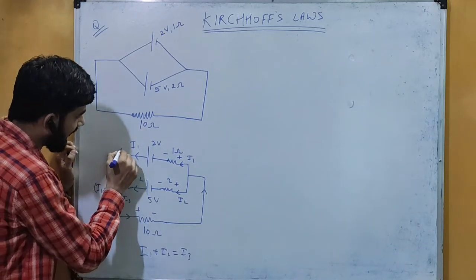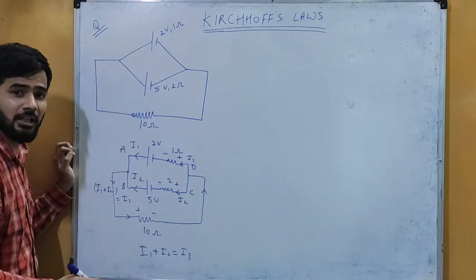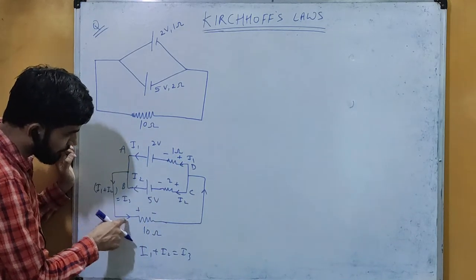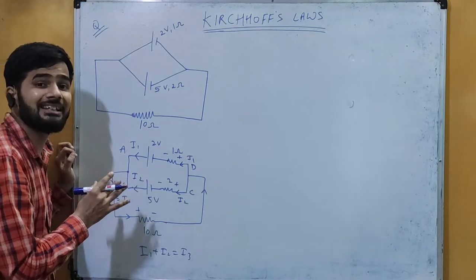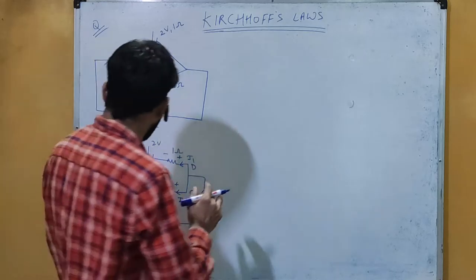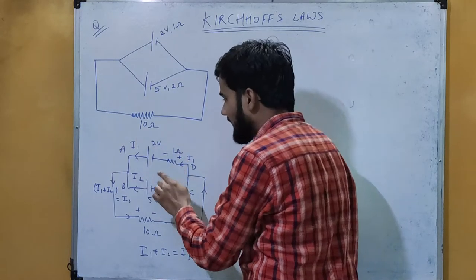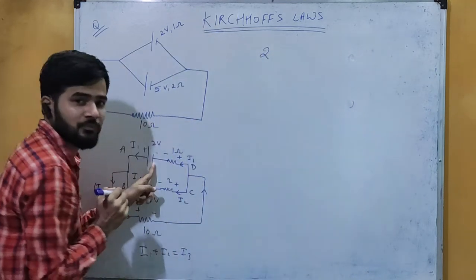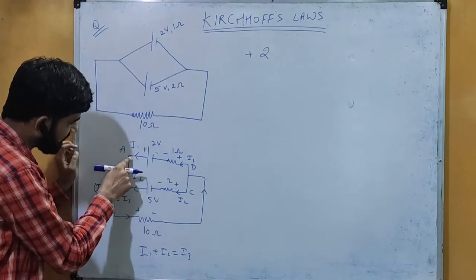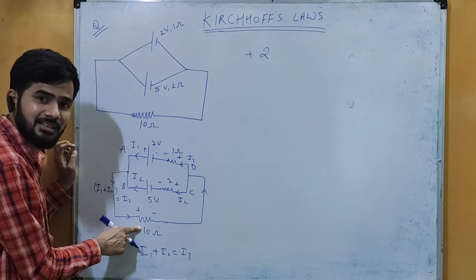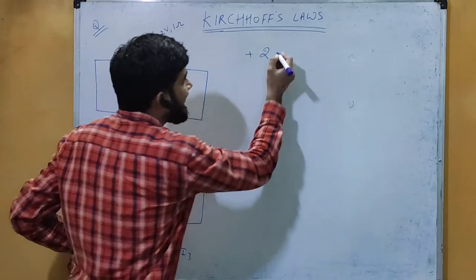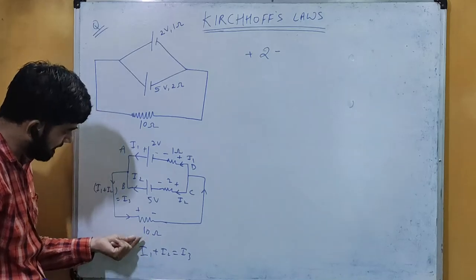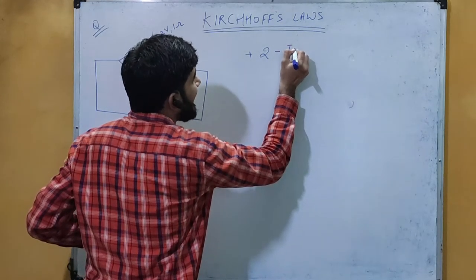Label the circuit as A, B, C, D. First, consider the loop containing the first cell and the external resistance. For that loop, we start by moving in the direction of the current — from the negative terminal to the positive terminal of the 2 volt cell, so we write plus 2. Then moving to the external 10 ohm resistance from plus to minus, we write minus 10 i3.